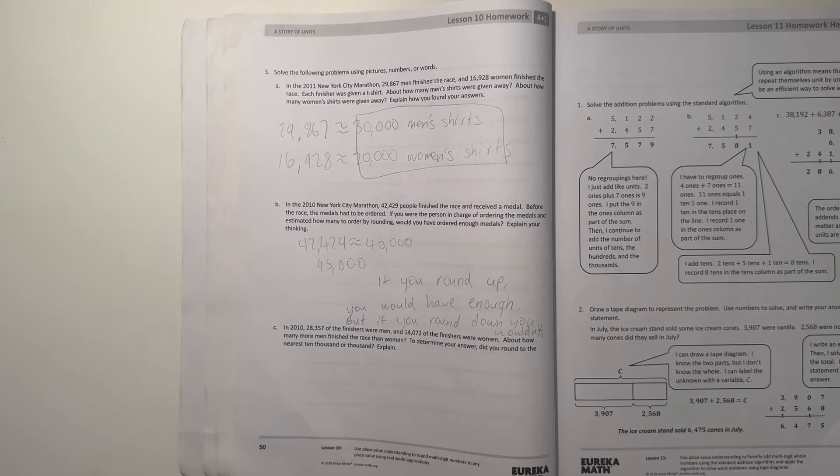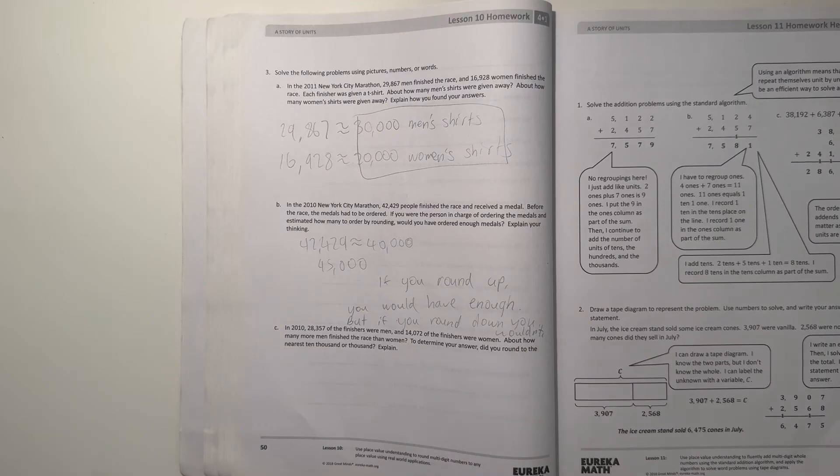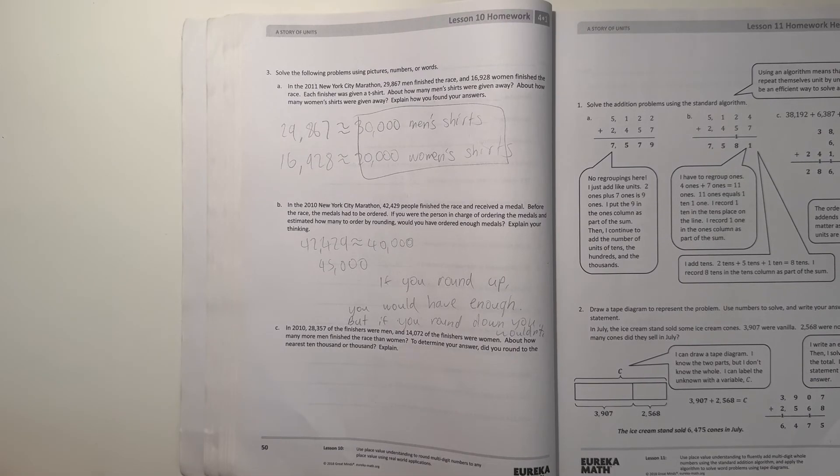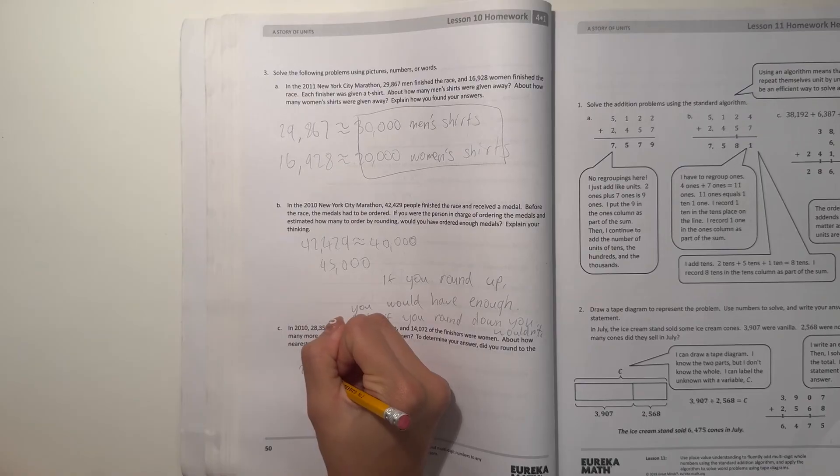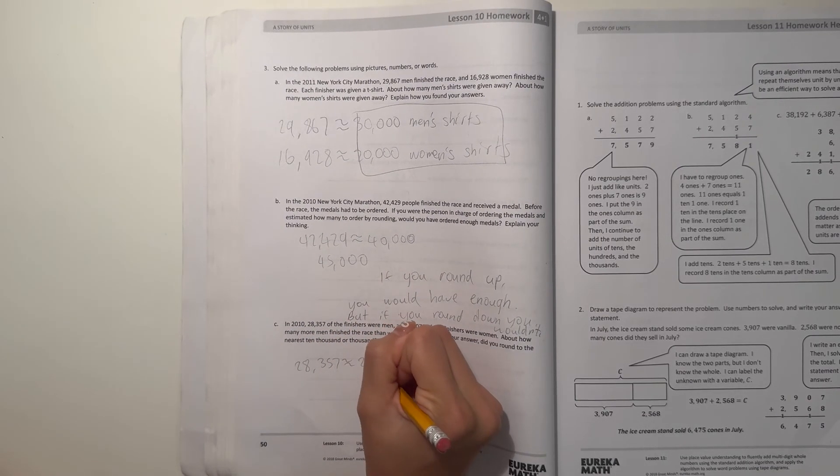And C, in 2010, 28,357 of the finishers were men and 14,072 of the finishers were women. About how many more men finished the race than women? To determine your answer do you round to the nearest 10,000 or a thousand? All right so I'm going to choose to round to the nearest thousand because thousands are smaller than 10,000 so I'm going to be a bit more accurate and closer to the real numbers. So 28,357 to the nearest thousand would round to 28,000.